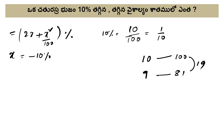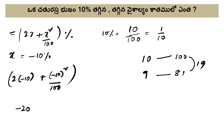Now for the decrease problem: how much percent decrease in the area? Same formula applies — 2x plus x square by 100% — only now it is a decrease. Substituting minus 10 for x: 2 times minus 10 plus minus 10 squared by 100. That gives minus 20 plus 100 by 100, so minus 20 plus 1 equals minus 19. So the area decreases by 19%.